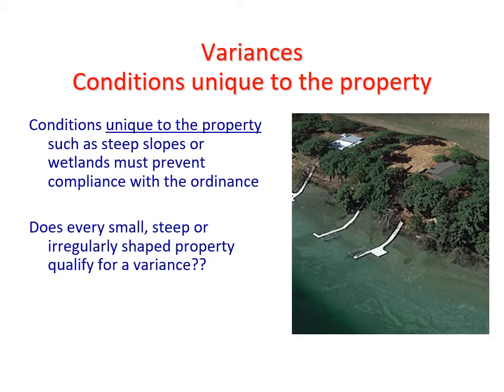Now back to the three variance standards. Conditions unique to the property, such as steep slopes or wetlands, must prevent compliance with the ordinance. If an alternative location exists on the property that would not require a variance, this standard is not met. Does every small or steep property qualify for a variance? No. If a person buys a small lot, they cannot expect to get variances to build a large home that encroaches into setbacks. Similarly, if a property owner applies for a variance due to a steep slope, their property is not unique because the steep shoreline affects many properties in the area.